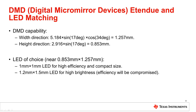The calculation can be separated along width and height directions, where the size times the sine of the cone angle would preferably match the size of a Lambertian emitting LED, which has an emitting cone angle of ±90 degrees. Notice this is a side-illuminated DMD where the illumination direction is along the DMD width direction at around 34 degrees, so the width direction will need to add a cosine effect to it. As a result, we calculate the DMD is capable of matching to a 1.257 mm by 0.853 mm Lambertian emitting LED.